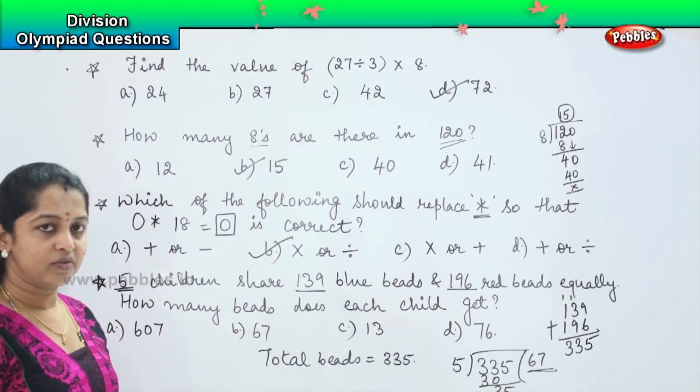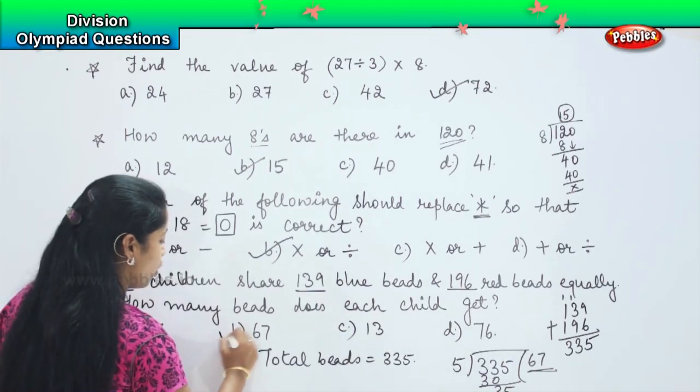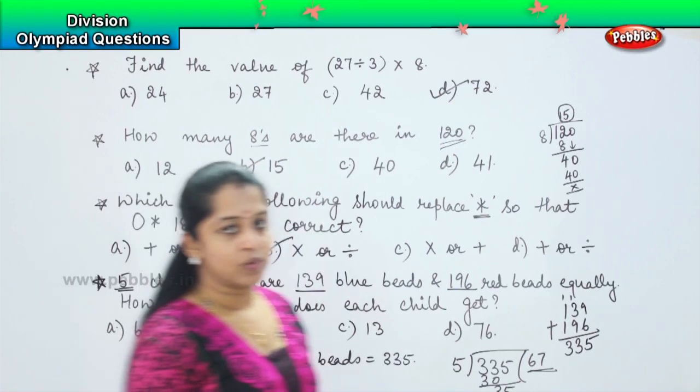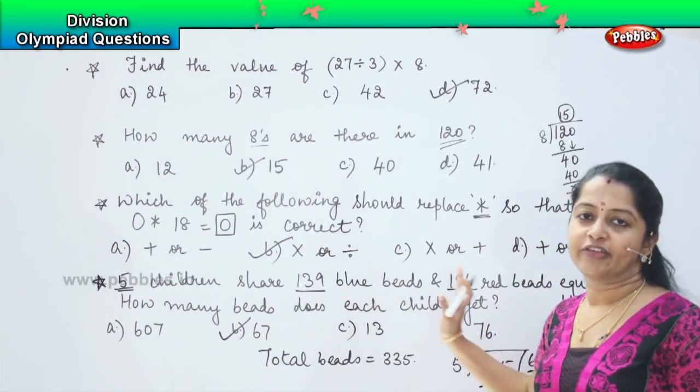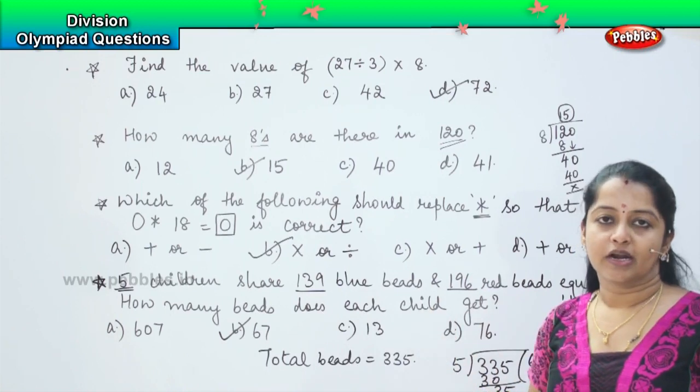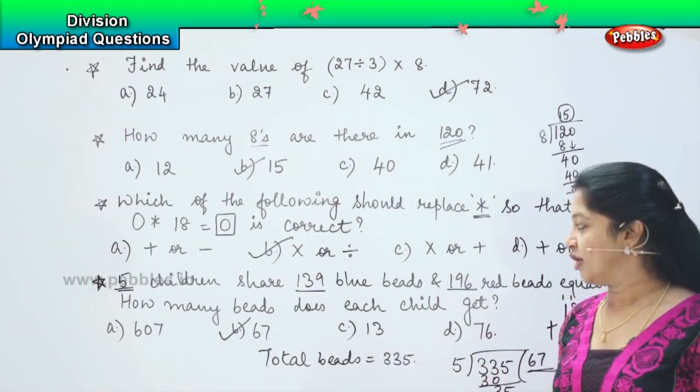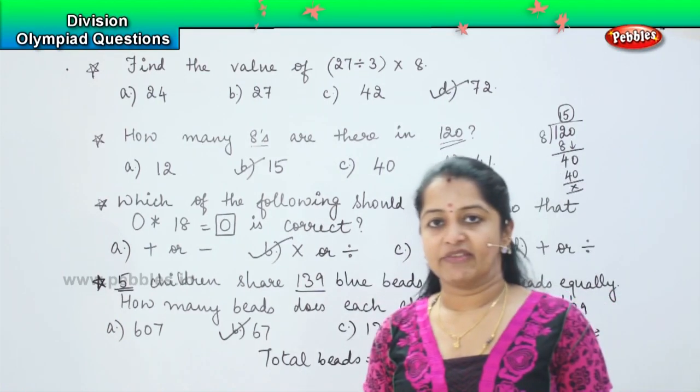Where is 67? Where is 67 children? Yes, option B, 67 is the right answer. Got it? So this information, the splitting of information is just given to confuse us. So did you understand this question? Shall we move ahead children?